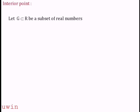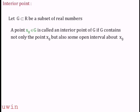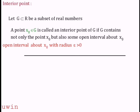First, what is an interior point? Let G be a subset of the real numbers. A point x-naught in G is called an interior point of G if G contains not only the point x-naught but also some open interval about x-naught. That is, a small open interval is contained within G. The open interval about x-naught with radius epsilon — x-naught minus epsilon to x-naught plus epsilon — is the open interval with radius epsilon.